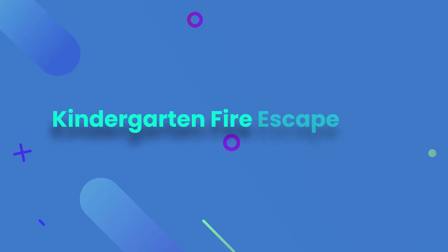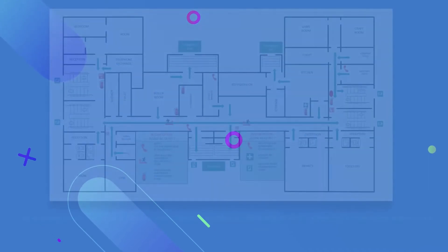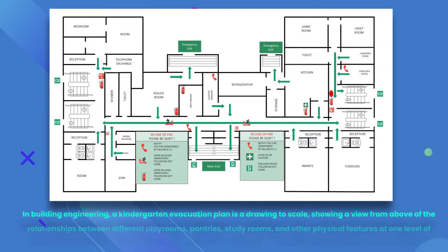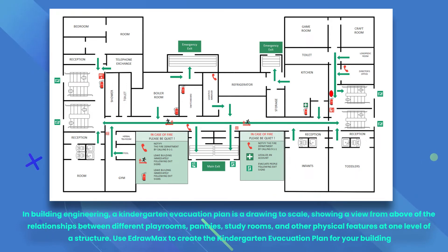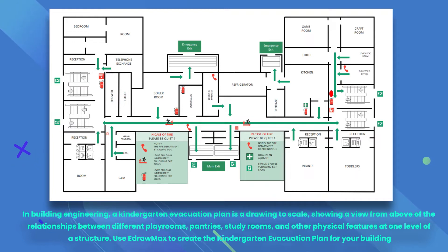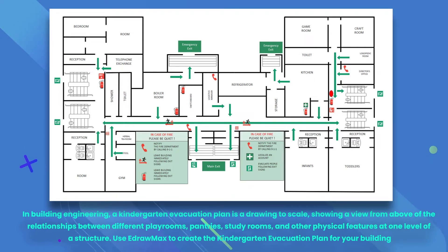In building engineering, a kindergarten evacuation plan is a drawing to scale showing a view from above of the relationships between different playrooms, pantries, study rooms, and other physical features at one level of a structure. You can use eDraw Max to create the kindergarten evacuation plan for your building.